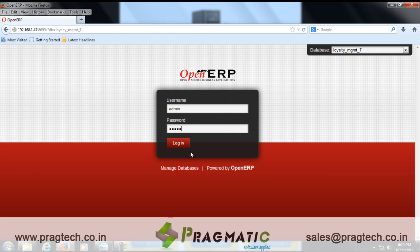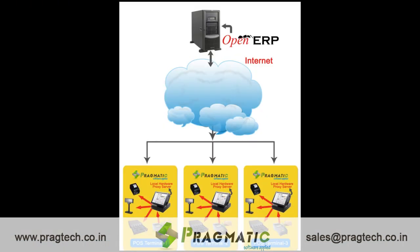Pragmatic Techsoft has changed the functionality of OpenERP POS to make it suitable for the retail industry. This module has complete linkages with hardware machines like touch screen monitor, cash drawer, barcode scanner, mini printer, and credit card swipe terminal.